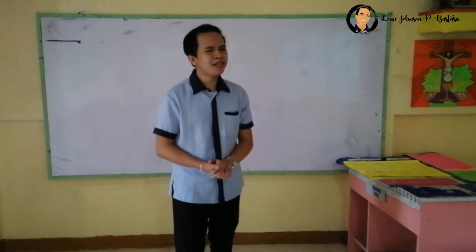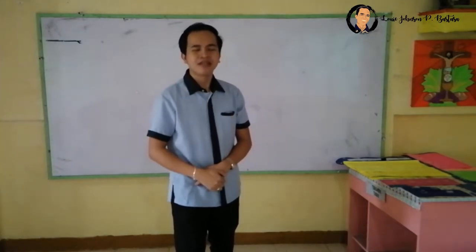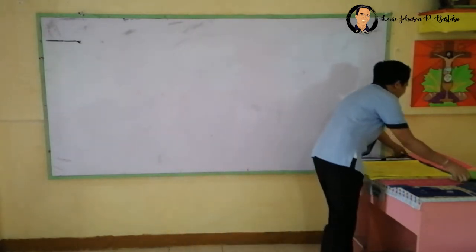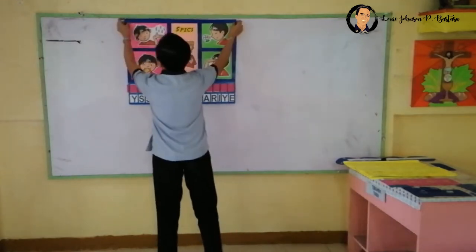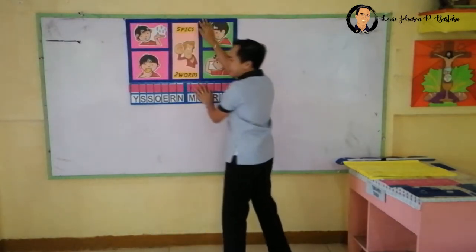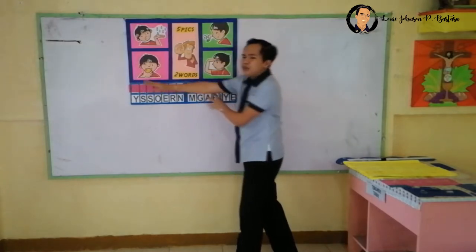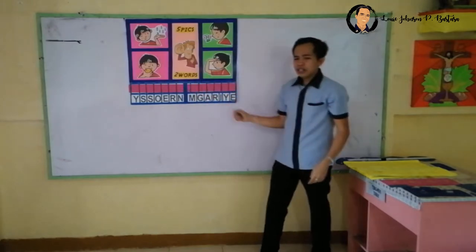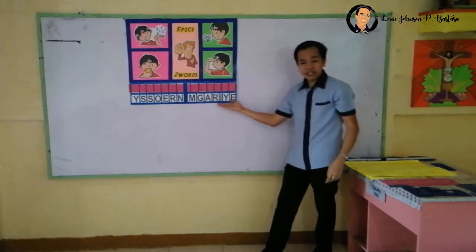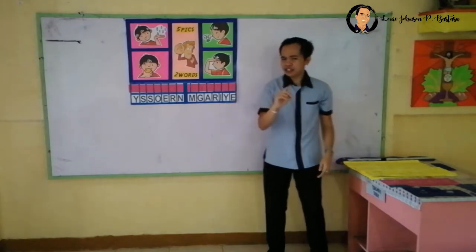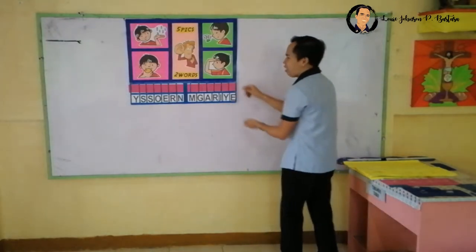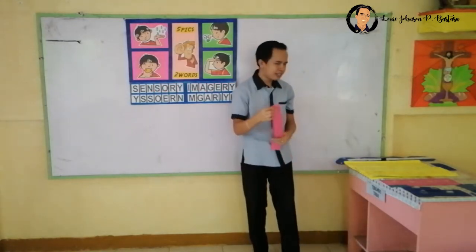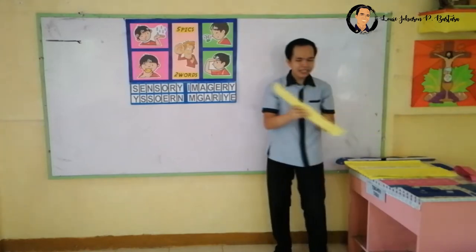Today we will have a game. Are you familiar with 'Four Pics, One Word'? I have modified that game — it's now 'Five Pics, Two Words.' Take a look at this. Same mechanics: you guess the hidden words by referring to these pictures. The letters below will serve as your guide. The hidden words are... 'sensory' and 'sensory imagery'! Very good! Because today, class, our lesson will be about sensory imagery.